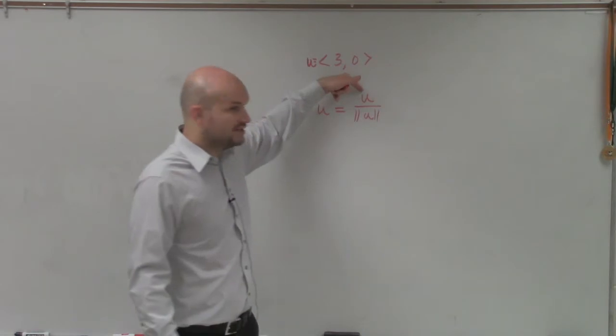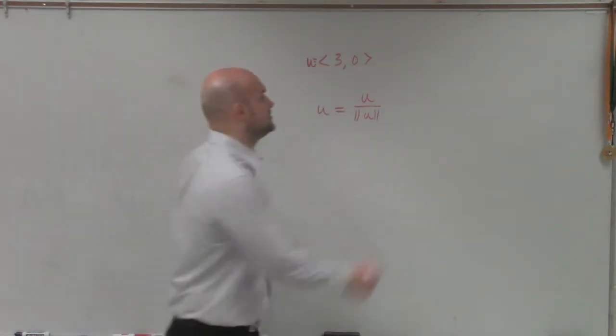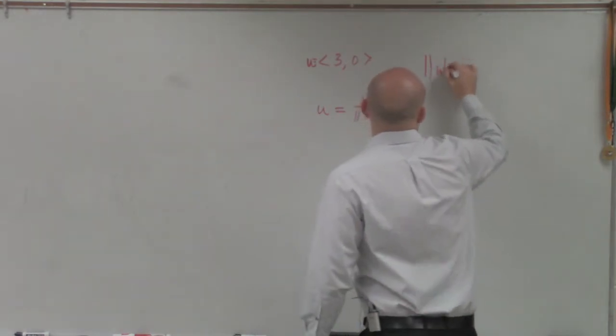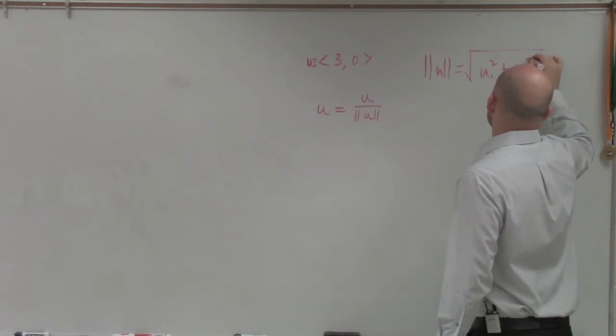So we take the vector, which is 3 comma 0, and divide it by its magnitude. Now, remember, the magnitude of a vector is equal to u1 squared plus u2 squared.